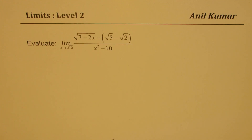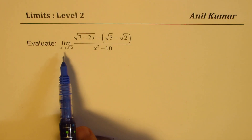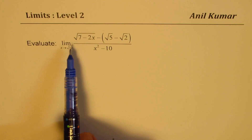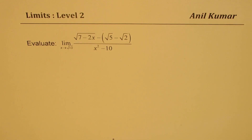I'm Anil Kumar sharing with you a question from one of our subscribers. We need to find the limit when x approaches square root of 2 for square root of 7 minus 2x, minus within brackets square root 5 minus square root 2, divided by x squared minus 10.